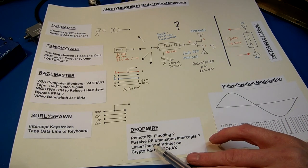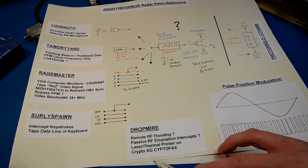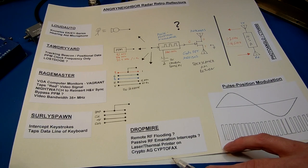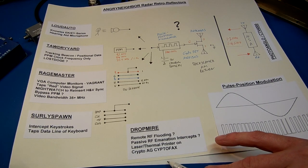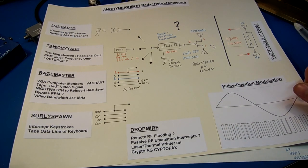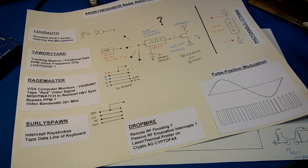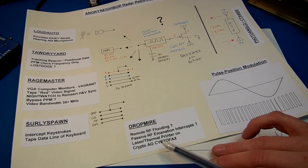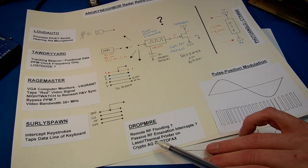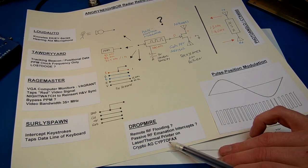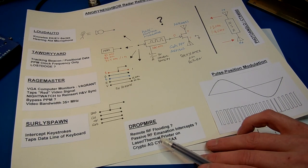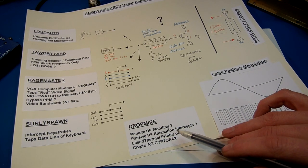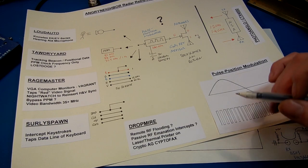The DropMiner attacks were against the Crypto AG Crypto Fax. I believe they weren't attacking the crypto directly. I believe they were attacking the thermal or the laser printer inside the fax machine. And they were receiving passive RF emanations coming from that. Because every time that laser would fire, it would create a little RF burst.